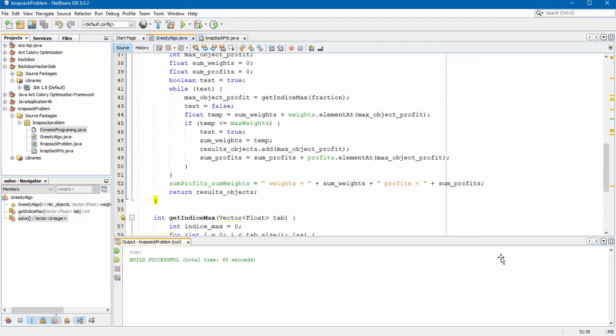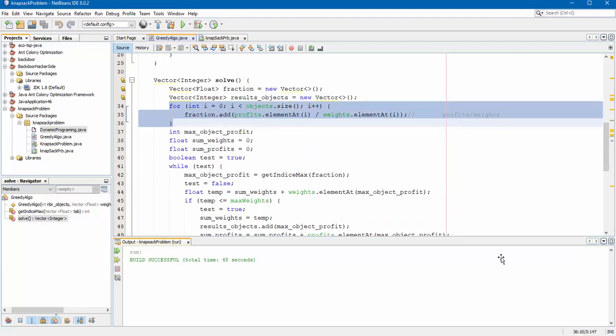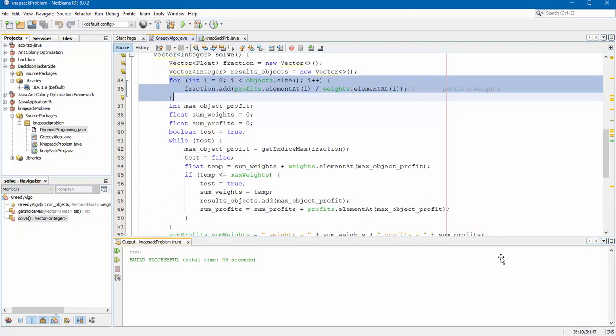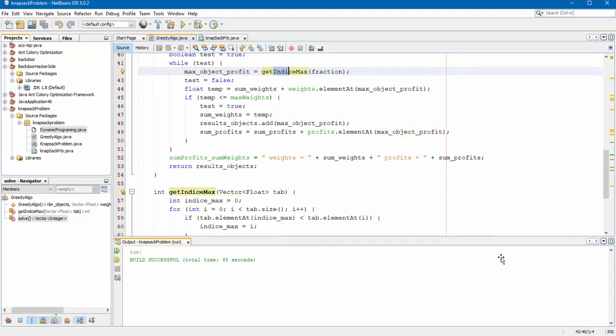After that, this is the solve method. I create a fraction vector. This vector contains each profit by its weight. In this loop, I calculate the profit by the weight. Here I create a loop. The maximum object profit receives get index max fraction. So let's move into get index max.